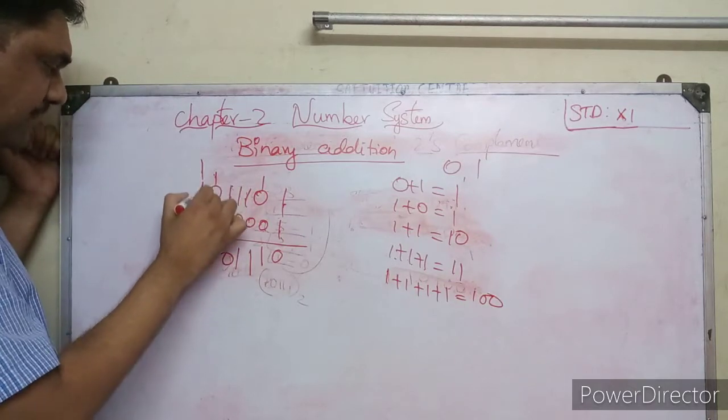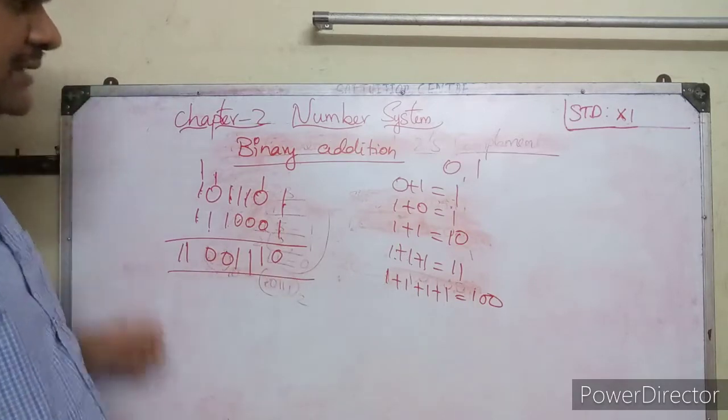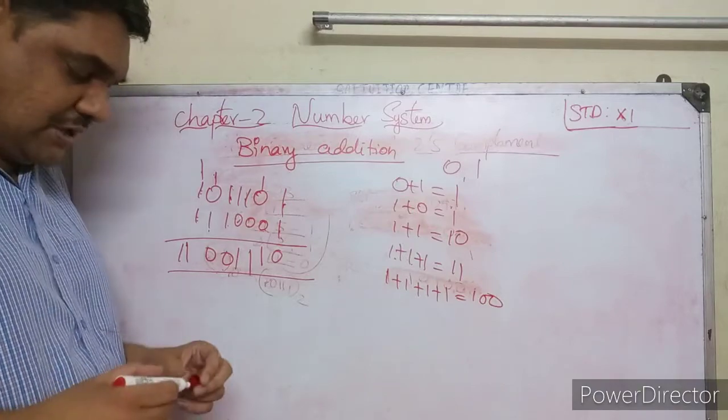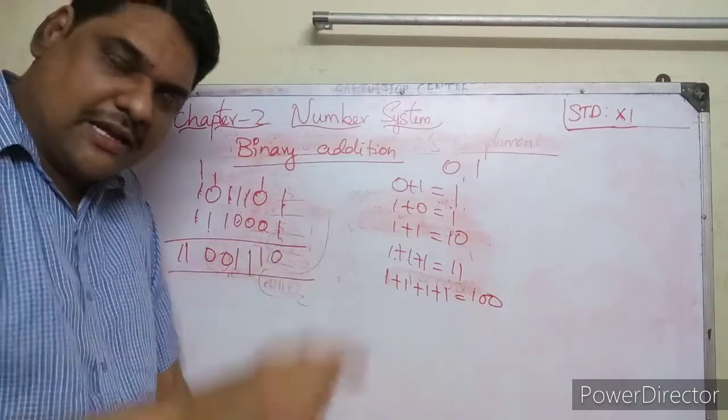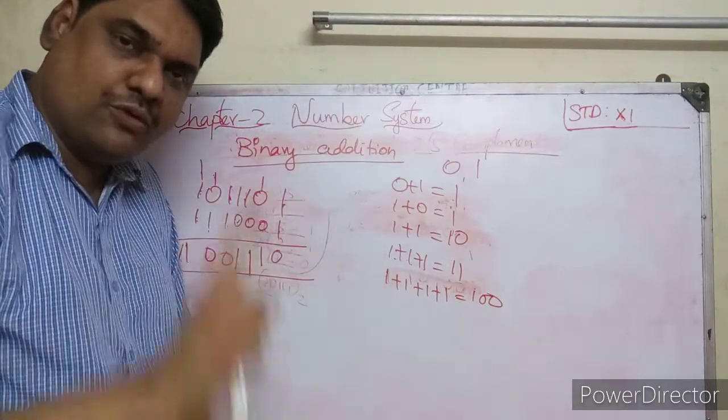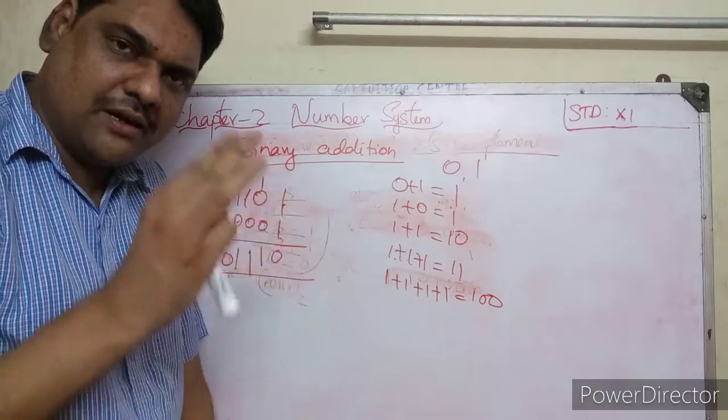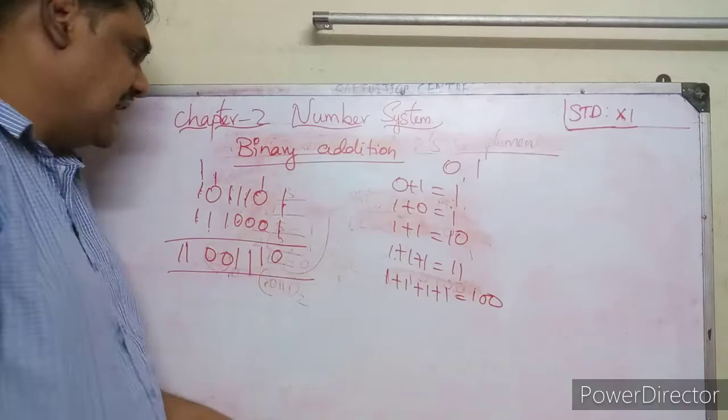So in binary: one plus one is one with carry, giving 10. This is binary addition.